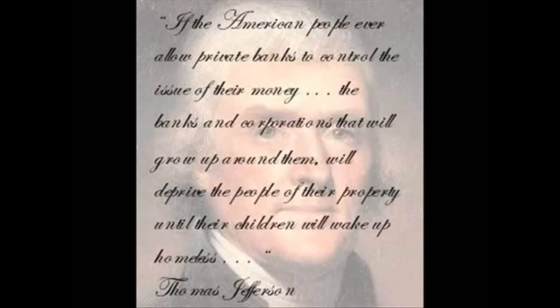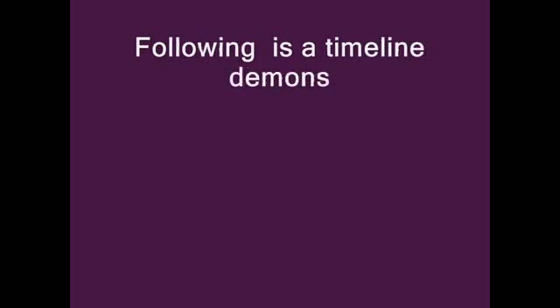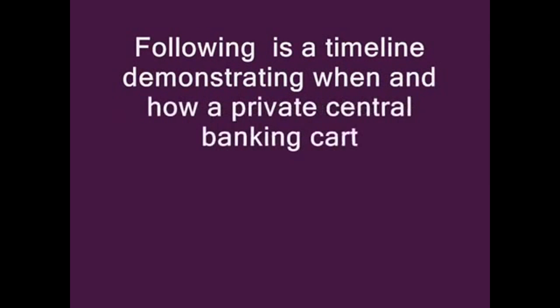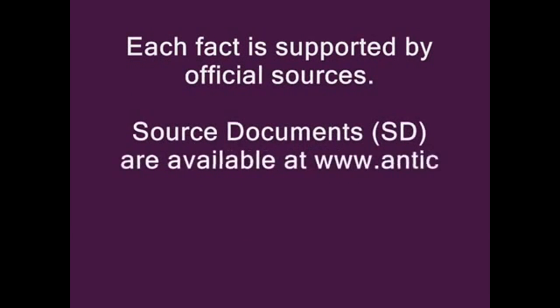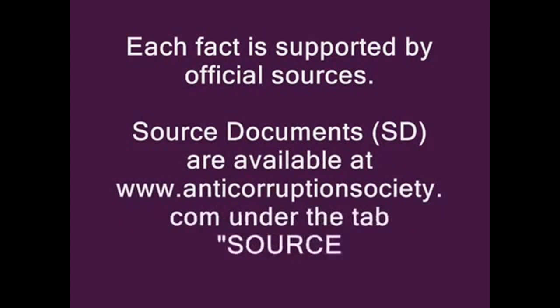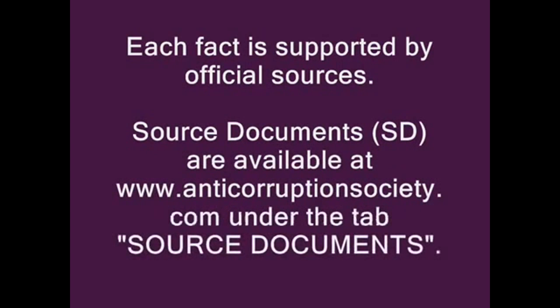Thomas Jefferson said: 'If the American people ever allow private banks to control the issue of their money, the banks and corporations that will grow up around them will deprive the people of their property until their children will wake up homeless.' Following is a timeline demonstrating when and how a private central banking cartel got control of the government, the people, and the assets of the United States. Each fact is supported by official sources. Source documents are available at www.anticorruptionsociety.com under the tab Source Documents.